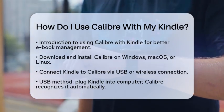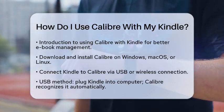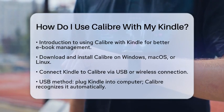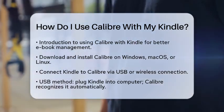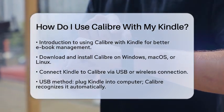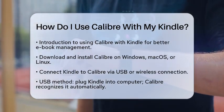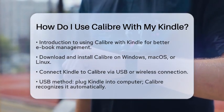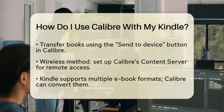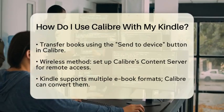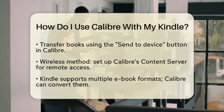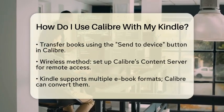Once you have Calibre installed, it is time to connect your Kindle. There are two main ways to connect your Kindle to Calibre. The first method is through a USB connection. Simply plug your Kindle into your computer using a USB cable. Calibre should automatically recognize your device, and once it does, you can transfer books by clicking the Send to Device button.